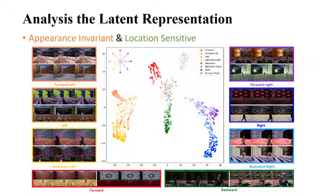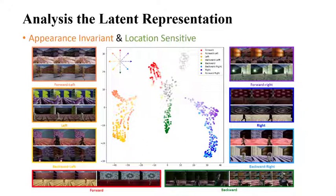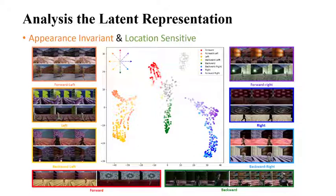It can be seen that when the target position is the same but appearance is different, the target's hidden representation distance is very close. But when the position changes, the representation distance gradually increases — showing that the model learns a feature representation robust to the target's appearance but sensitive to spatial movement.